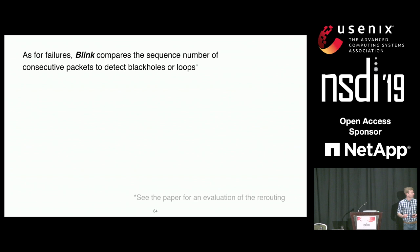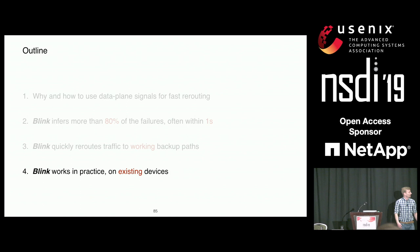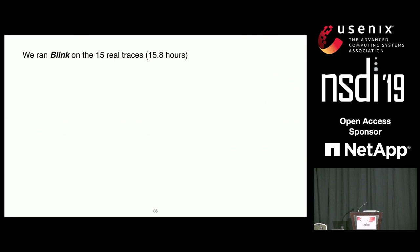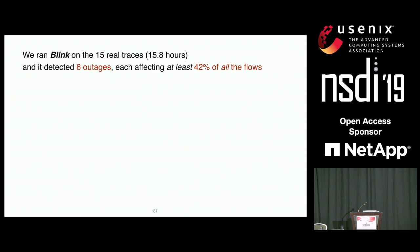We ran Blink on the 15 real traces. Even without ground truth, it detected six outages. We investigated each, and found that for each of them, at least 42% of all flows — not just the 64 monitored — were experiencing retransmissions during a very short period of time. This clearly means something was wrong in each case, so rerouting traffic was justified. Those cases are likely not false positives.